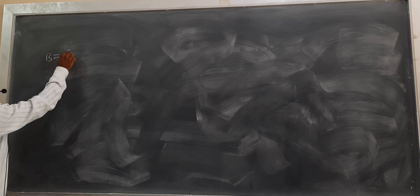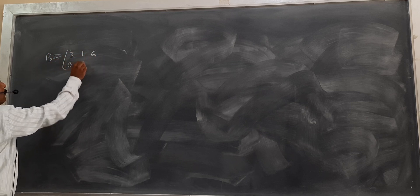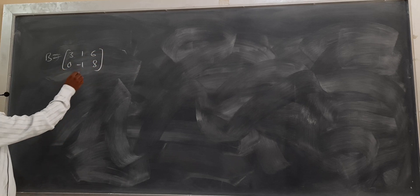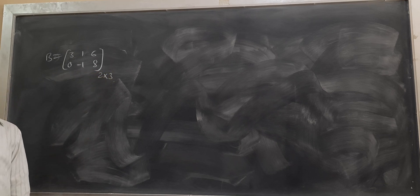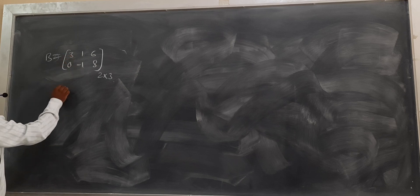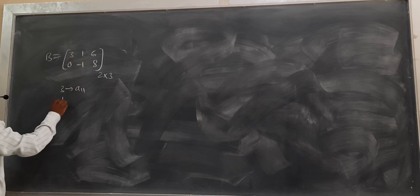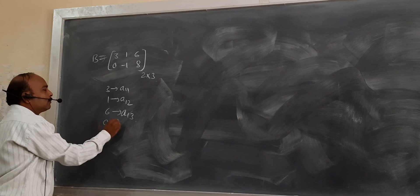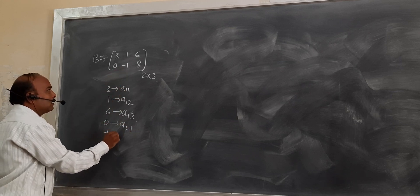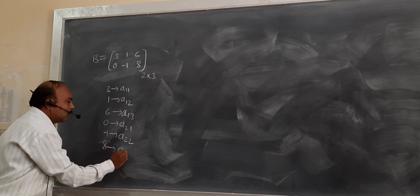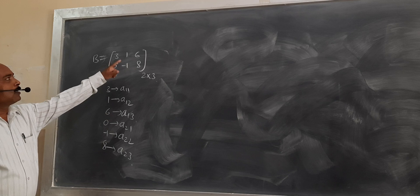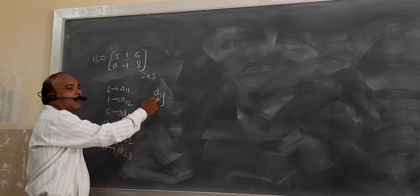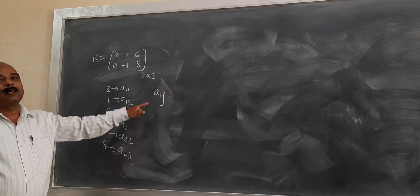Similarly, consider the example B equal to [3, 1, 6; 0, -1, 8]. Here it has totally 6 elements and the order of this matrix is 2 by 3 because it has 2 rows and 3 columns. So 3 is element A11, 1 is element A12, 6 is element A13. Similarly, 0 is A21, -1 is A22, and 8 is A23. We indicate the elements of the matrix using the notation Aij where i represents row number and j represents column number.